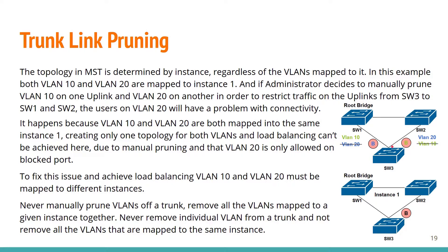So he is going to get some kind of load balancing, but because both VLANs are mapped to only one instance 1, and the topology in MST is determined by instance, we have the following logical topology where the uplink from SW3 to SW2 is blocked. So in this case, VLAN 20 is blocked on this link by MST and on this link it's pruned by the administrator. So there is no connectivity from SW3 in VLAN 20 to both switches.